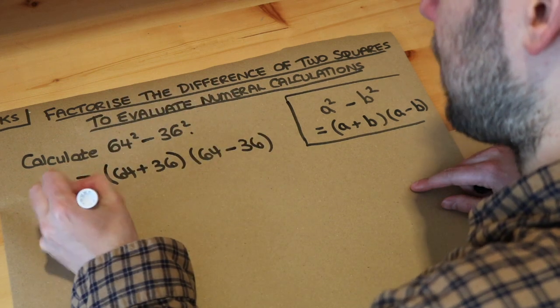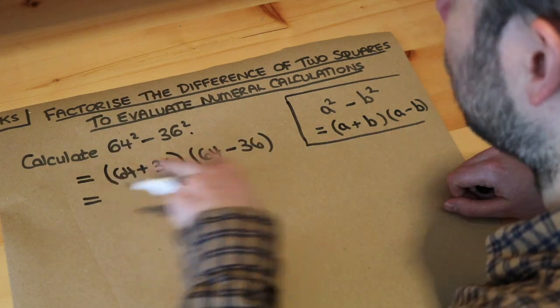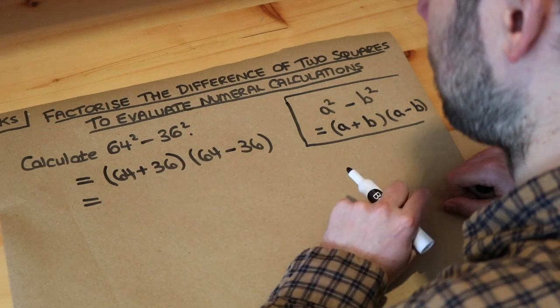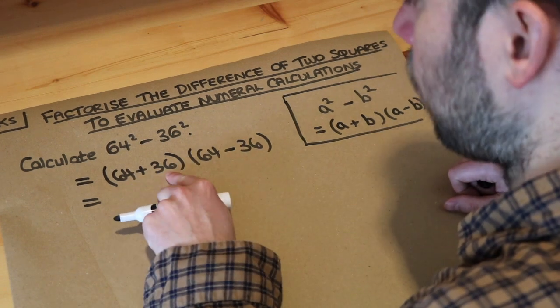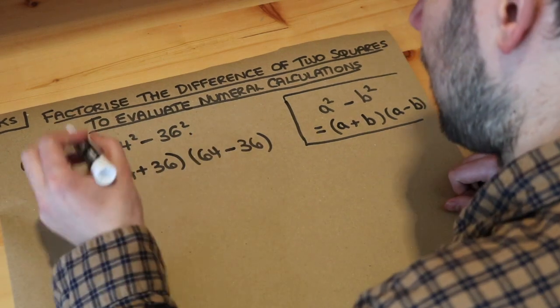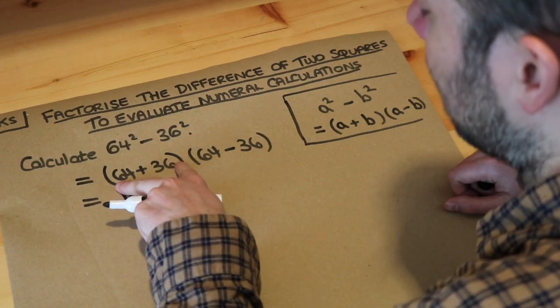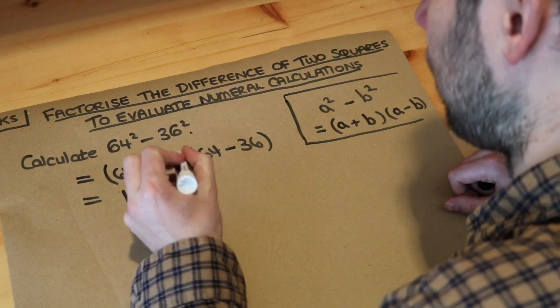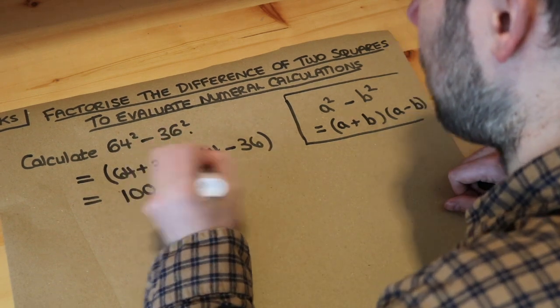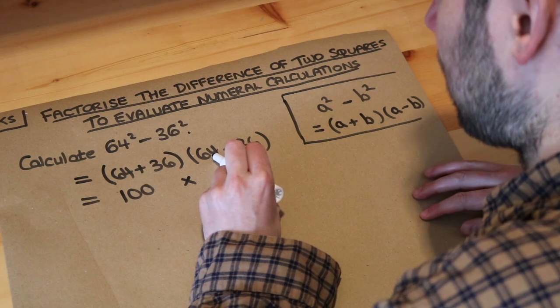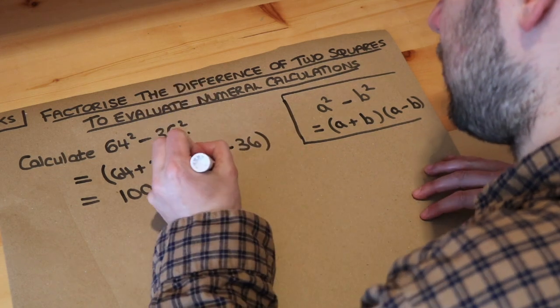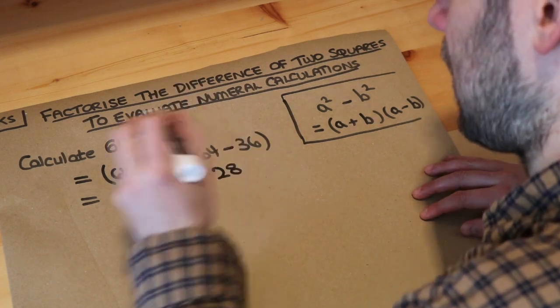Now we've got two brackets and we can work out easily what each of these simplifies to. What is 64 plus 36? That's just 100. Remember, when you have two brackets next to each other in algebra, it means you multiply them together, so we've got this implicit times in the middle. What is the second bracket? 64 minus 36, that's just 28.